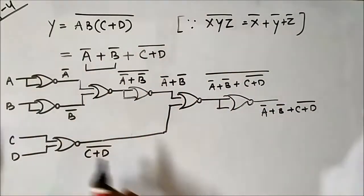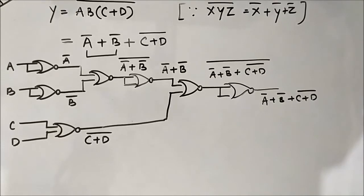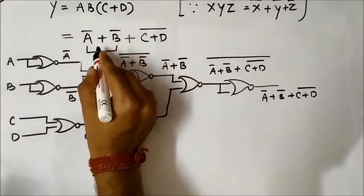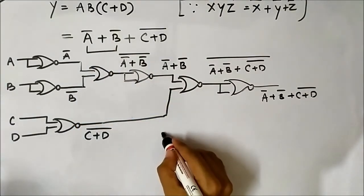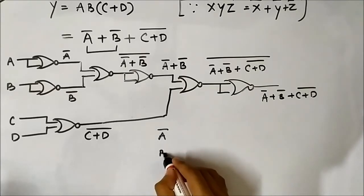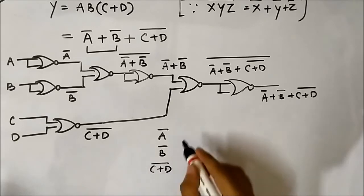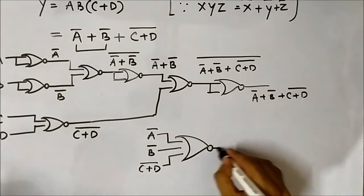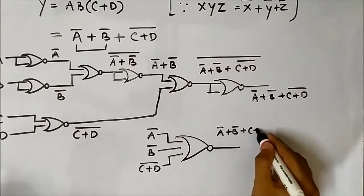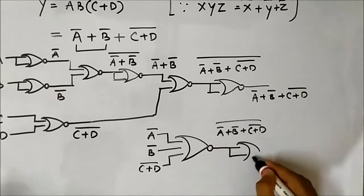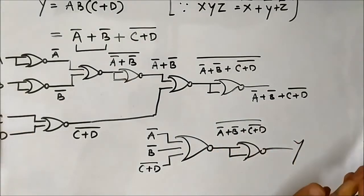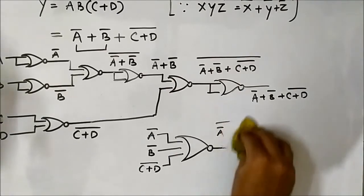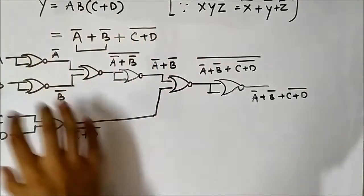If it had been said that we are allowed to use three-input NOR gates, we would have taken A complement, B complement, and C plus D complement, applied all three signals to a three-input NOR gate, gotten (A complement plus B complement plus C plus D complement) whole complement, then used a two-input NOR gate to complement it again and get the final expression. But since that was not mentioned, we cannot do that and must use two-input NOR gates throughout.